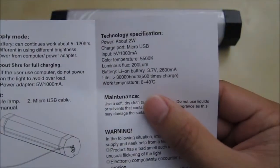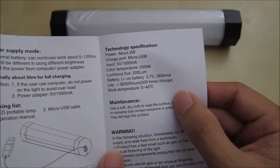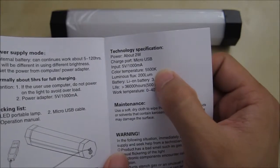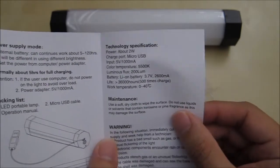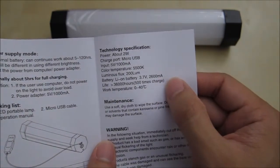And then you have some specifications here. Looks like it uses 2W and has a micro USB charging port, 5V 1000mA input. The color temperature is 5500K for anyone who's interested. You have 200 lumens for brightness and the battery is 2600mAh.